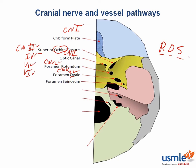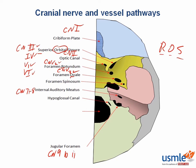The posterior cranial fossa structures pass through the temporal bone or the occipital bone. In the temporal bone we have the internal auditory meatus, where cranial nerves 7 and 8 pass through. The jugular foramen is at the border of the temporal and occipital bones, and cranial nerves 9, 10, and 11 pass through here. The hypoglossal canal is the small hole in the occipital bone which cranial nerve 12 passes through.